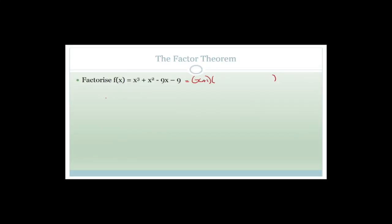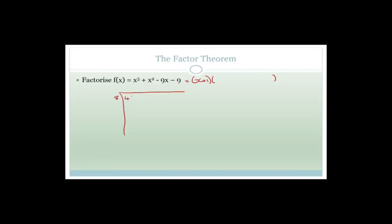I'm just going to detour for a second. Remember long division? Let's divide 8 into 4639. 8 goes into 46 five times - 5 times 8 is 40, leaving 6, then bring down the 3. So 8 goes into 63, etc. This is long division, and we're going to do essentially the same thing with x³ + x² - 9x - 9 divided by x + 1.